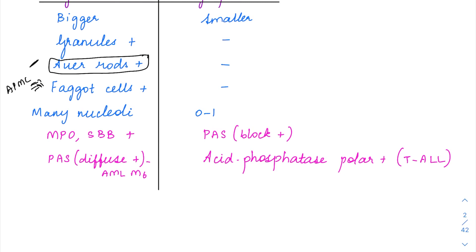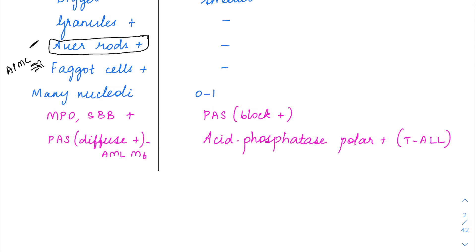In myeloblasts, there are going to be multiple nucleoli, as compared to a lymphoblast wherein you get only 0 to 1 nucleoli. Using special stains, you can identify whether it is a myeloblast or lymphoblast. Myeloblasts are going to be positive for the special stain myeloperoxidase — an enzyme present in the primary granules of myelocytes. Myeloperoxidase will be positive in myeloblasts, and it is also positive for Sudan black B.